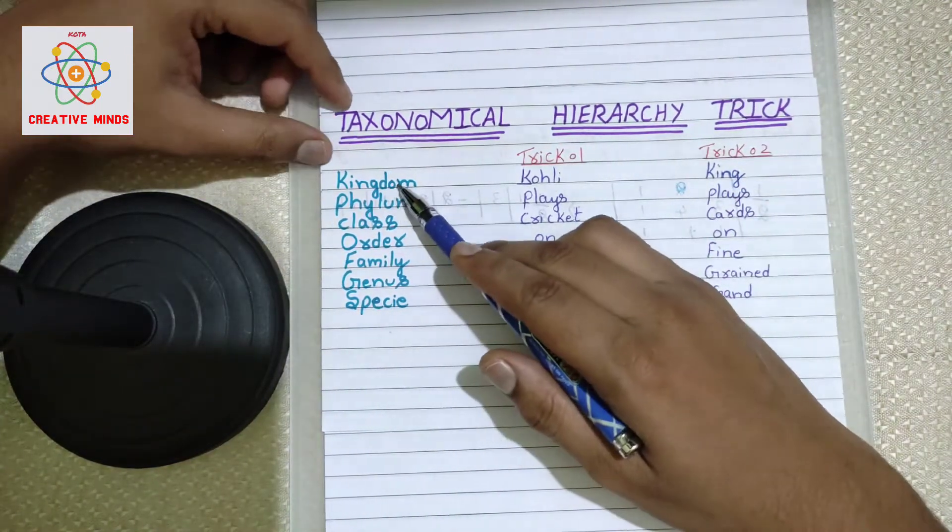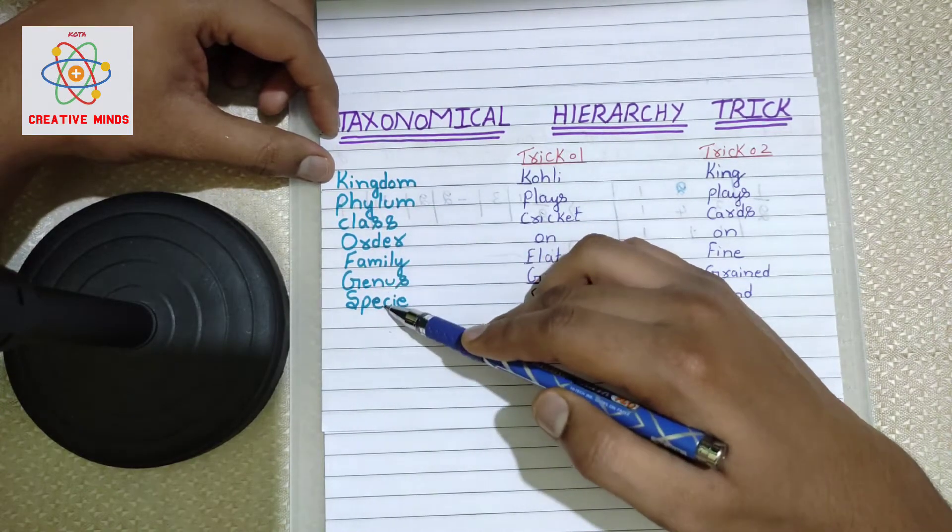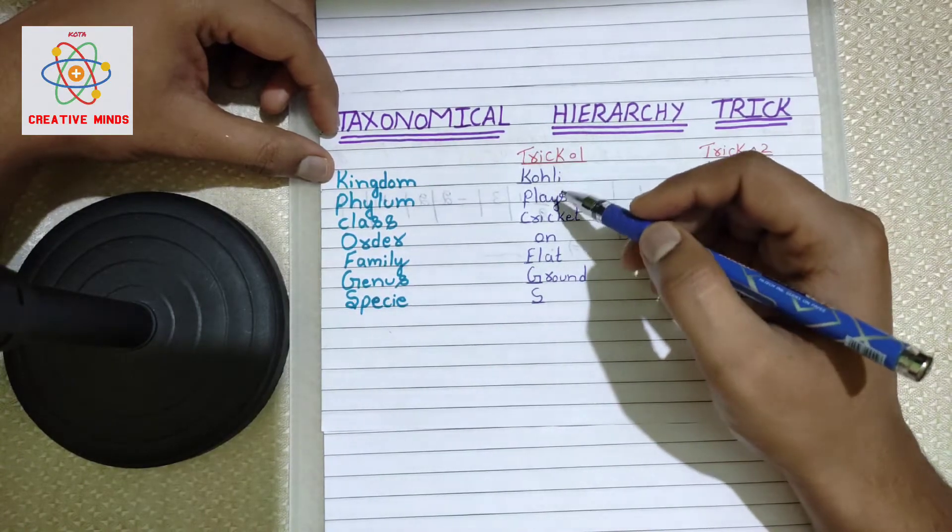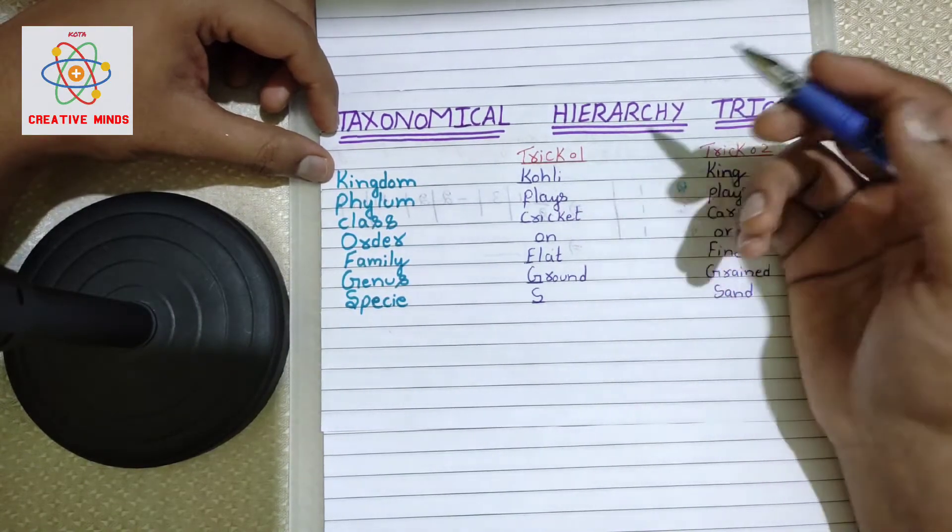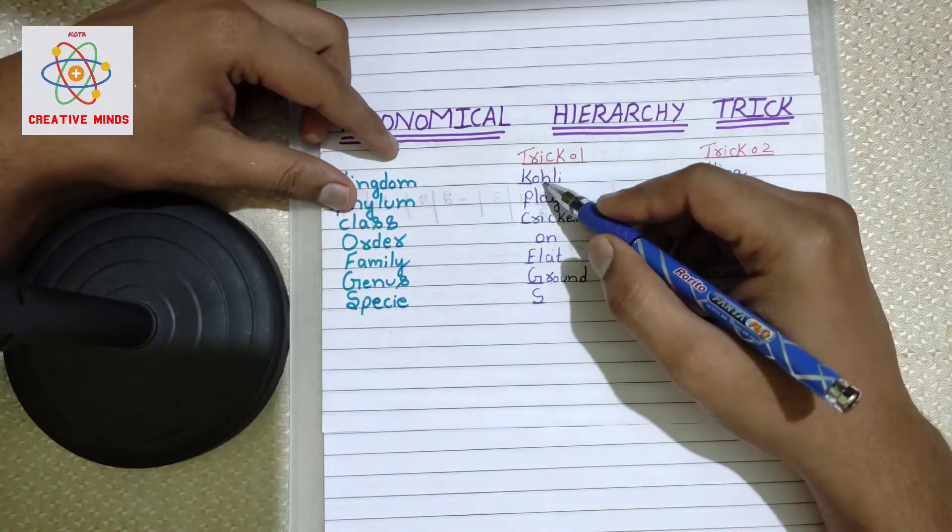As you can see here, I have written the taxonomical hierarchy: Kingdom, Phylum, Class, Order, Family, Genus, and Species. How to remember this? The first shortcut trick is my favorite because I love cricket, and those who love cricket might find this easy. Now, Koly - we write Koly.